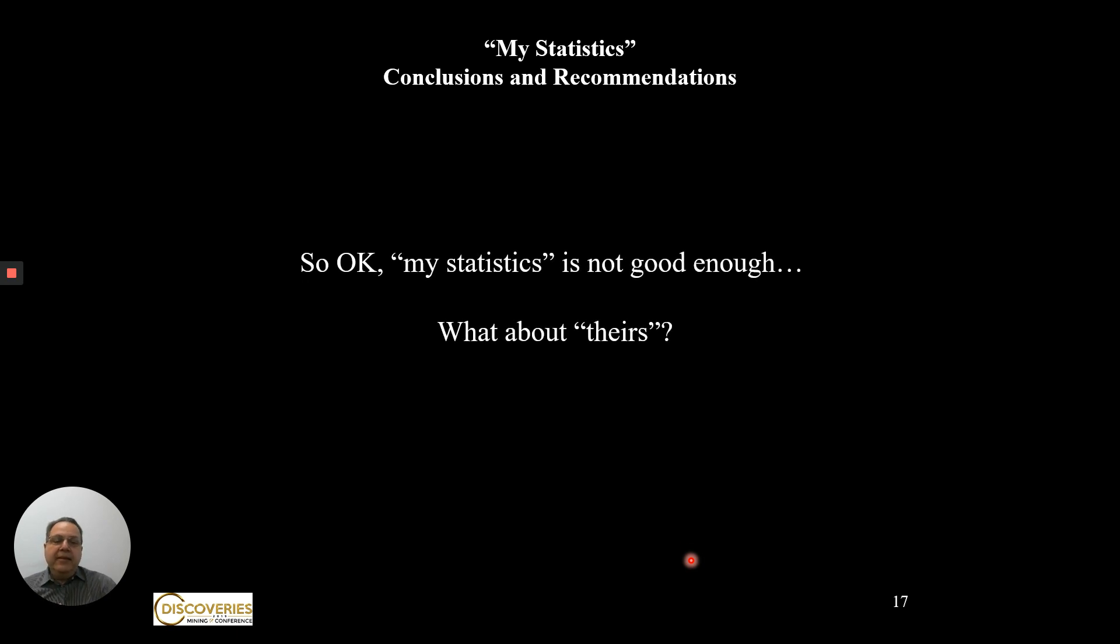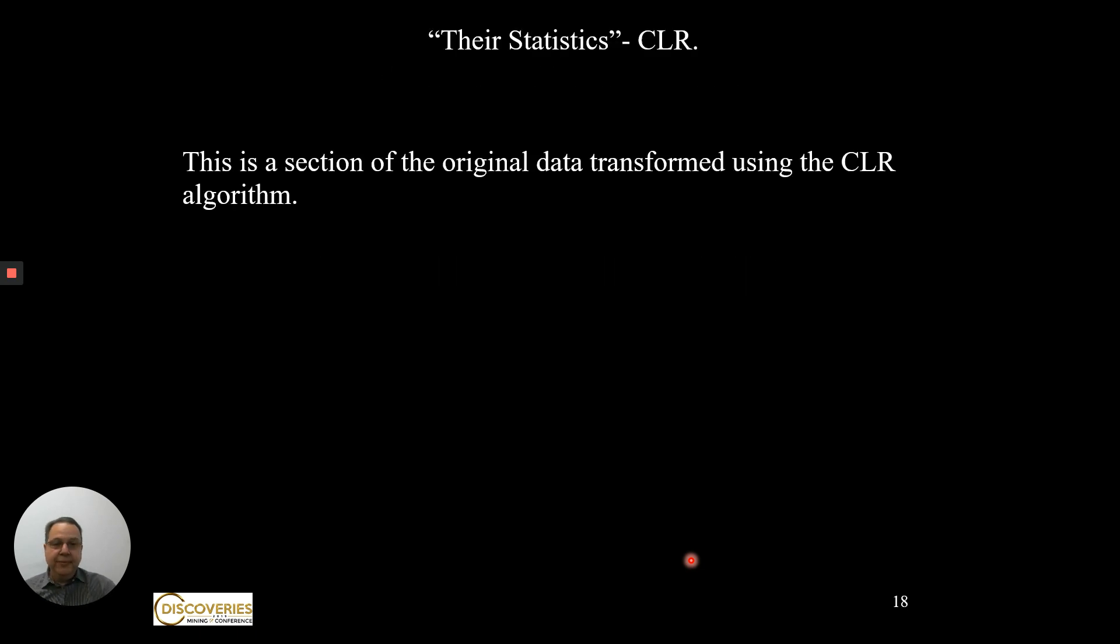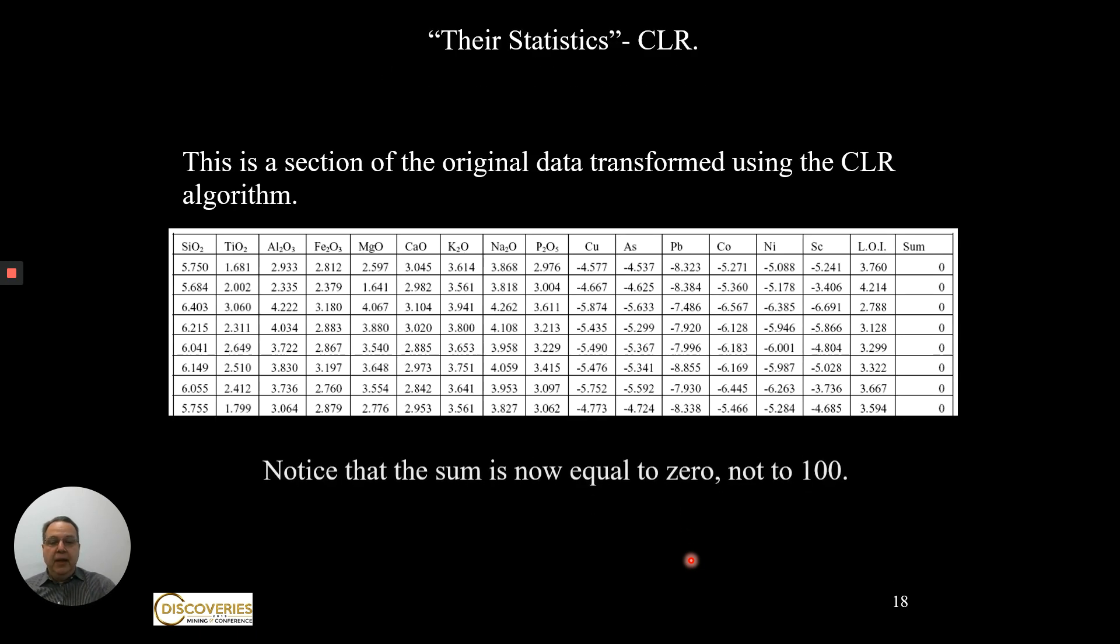So my statistics is not good enough. What about theirs? As I mentioned, CODA PAC uses three algorithms: ILR, CLR, and ALR to transform your data from a closed system to an open system. This is an example of using one of the algorithms, the CLR. As you can see, the sum of all the elements is now zero, not 100.